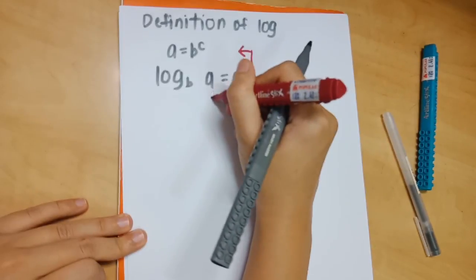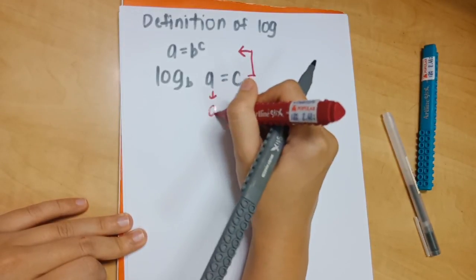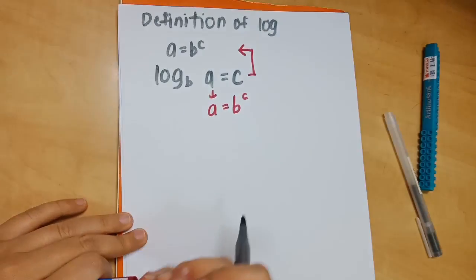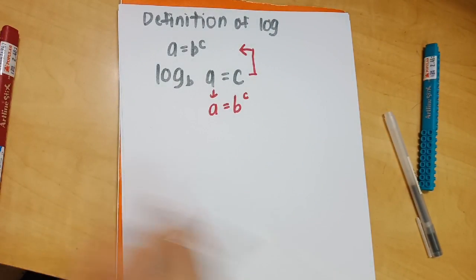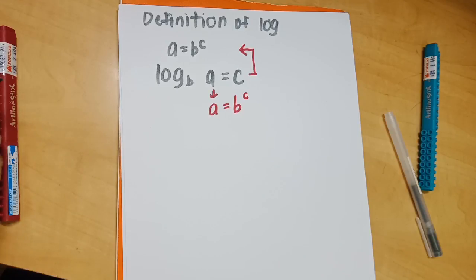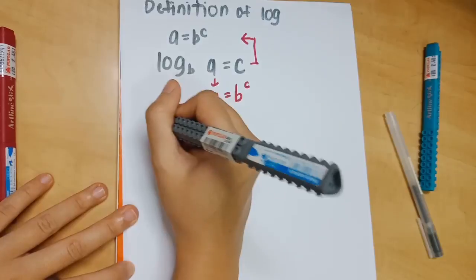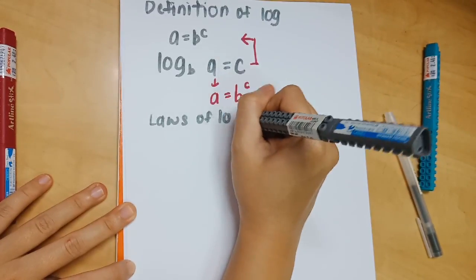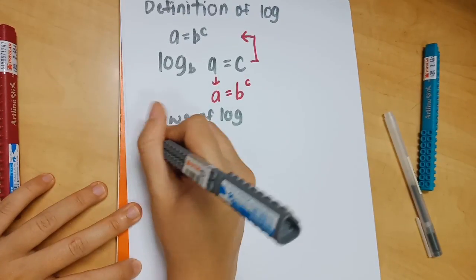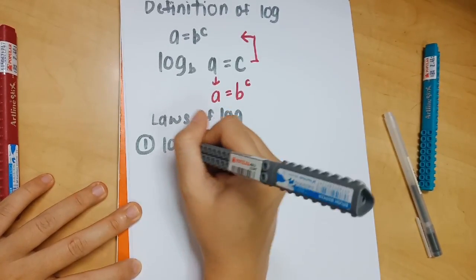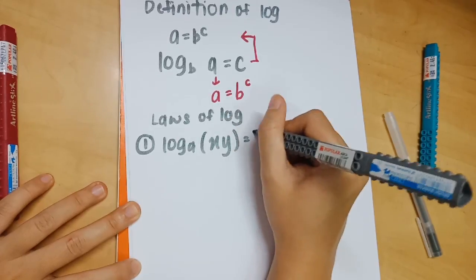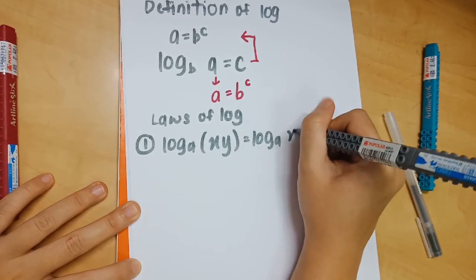First, we have the definition of logarithm: log_b a equals c, and from there you change it to a equals b to the power of c. The letter in the middle will be the king — so we have a, you bring down a. Then small will become big and big becomes small. So small b will become big B, and then big c will become small c. That is how you get a equals b^c.